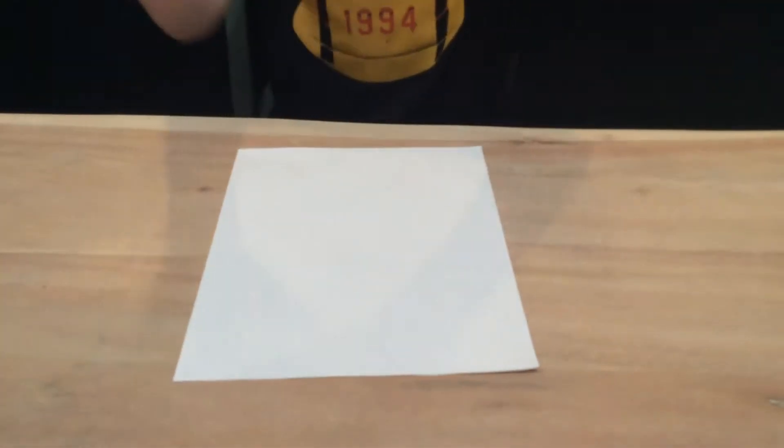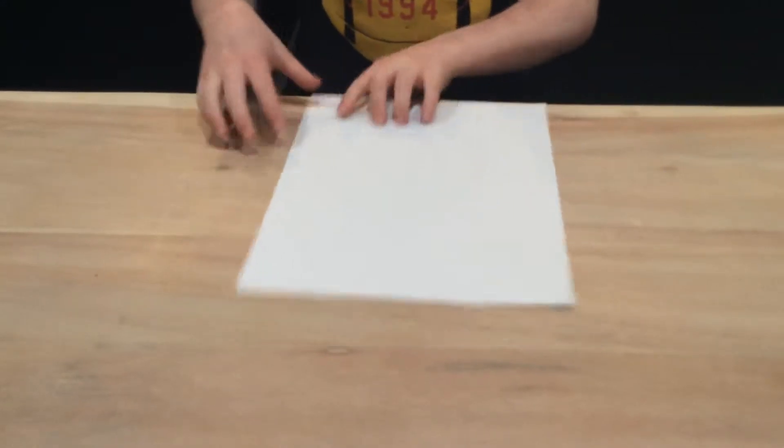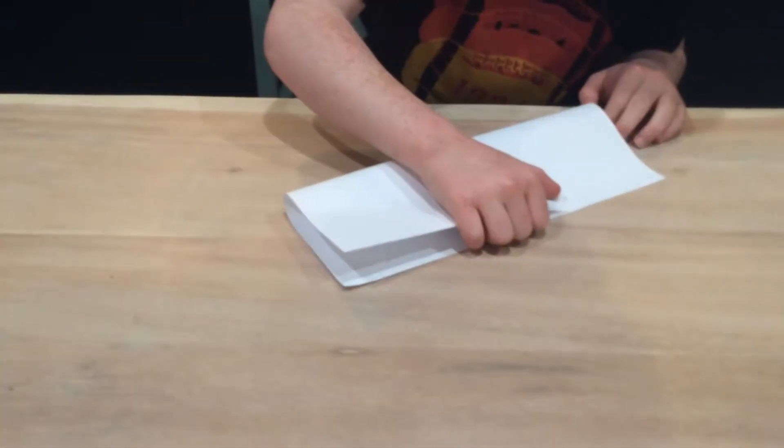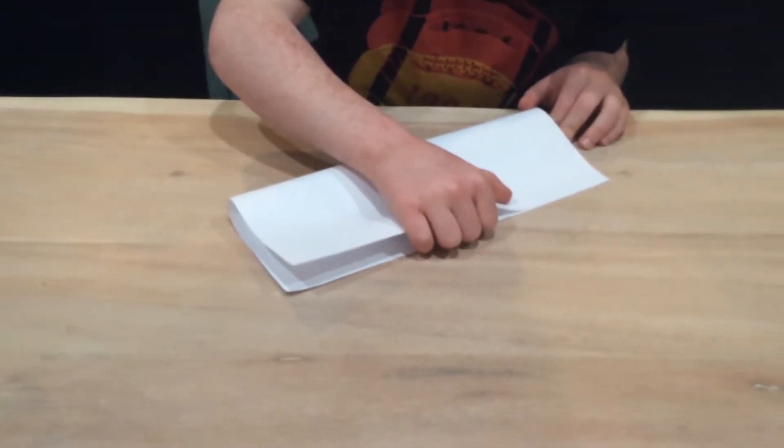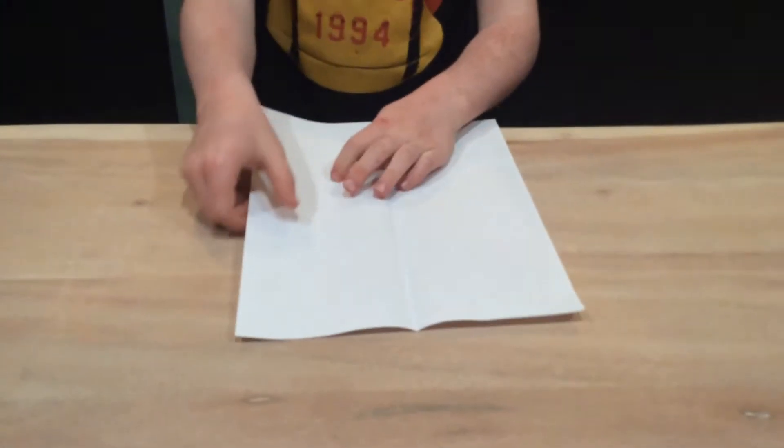Okay guys, here's how to make a paper airplane. First you fold the corners very even and then you unfold it.